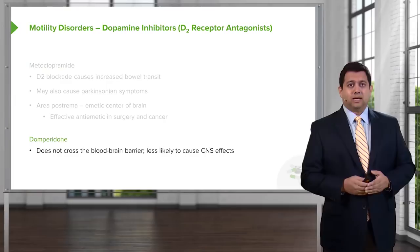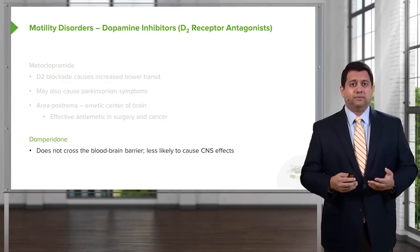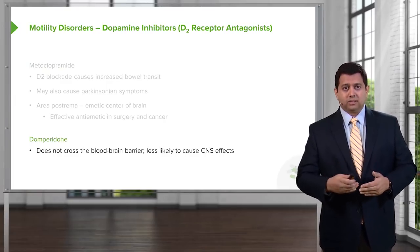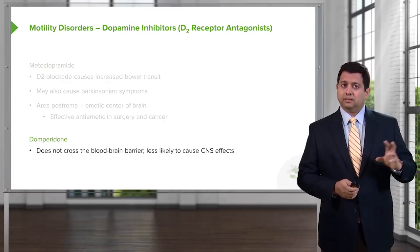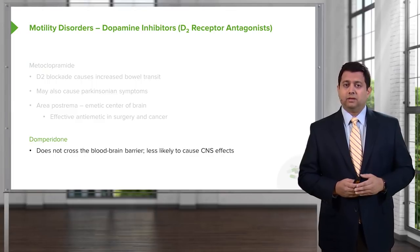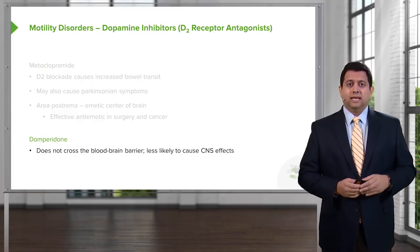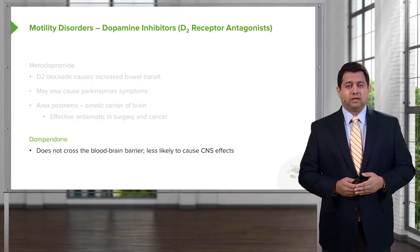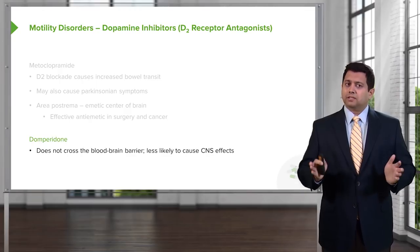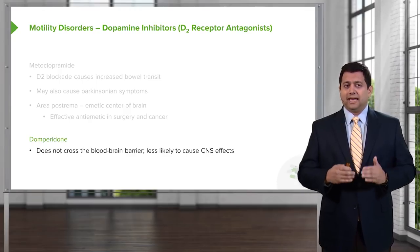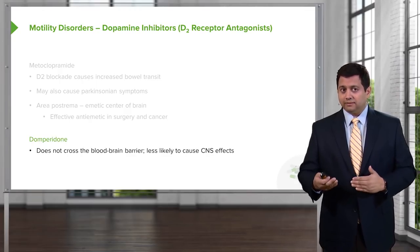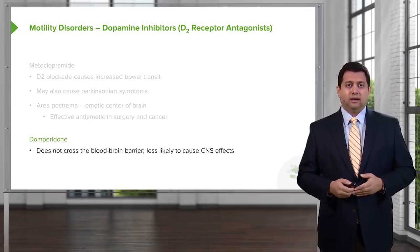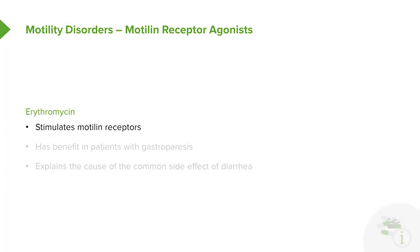Domperidone is another example of these agents. It does not cross the blood-brain barrier, which makes it different from metoclopramide and therefore less likely to cause CNS effects. Not surprisingly, the anti-emetic effects of domperidone are not that significant.